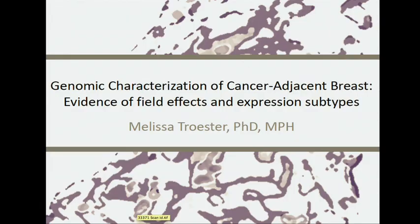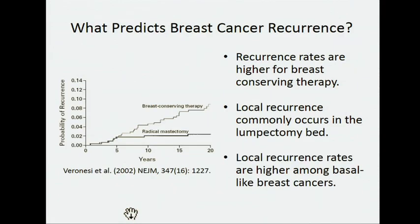It's great to be here and talk about the work of our Double Normal Committee. Our goal was to do some genomic characterization of cancer-adjacent breast tissue. What we're looking at is both field effects and expression subtypes. To get started, I wanted to give a bit of the translational relevance for looking at adjacent normal tissue.